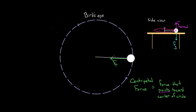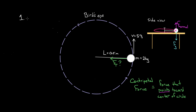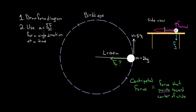But how would you ever solve a problem like this? What strategy do you use? The secret to solving centripetal force problems is that you solve them the same way you solve any force problem. First, you draw a quality force diagram, and then you use Newton's second law for one of the directions at a time. If the direction you chose didn't get you where you needed to be, just use Newton's second law again for another direction.